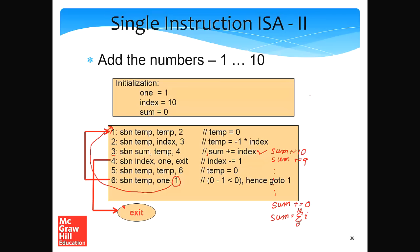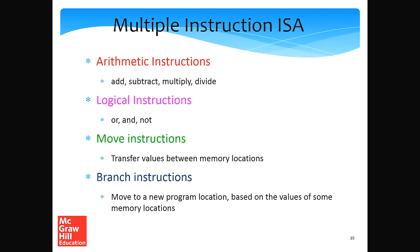In modern ISAs, you will have multiple instructions: separate instructions for add, subtract, multiply, divide; logical instructions for AND, OR, NOT; move instructions to transfer values between memory locations; and branch instructions to move to new program locations — implementing go-to, if-statements, for-loops, while-loops, and so on based on the values of memory locations.